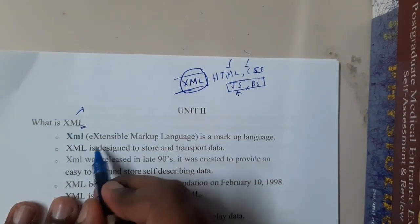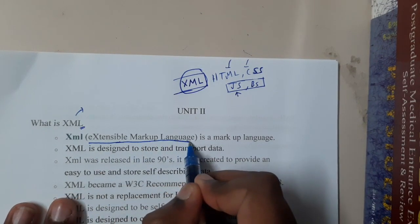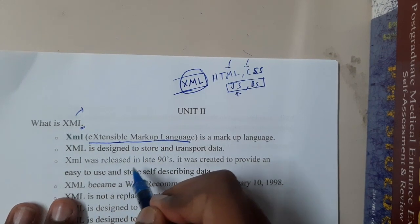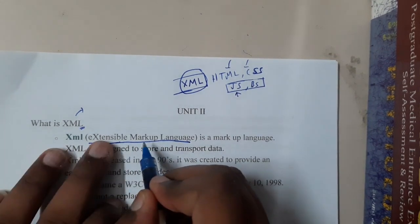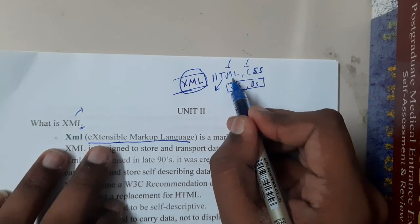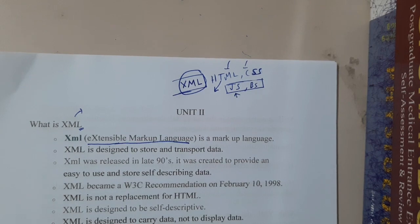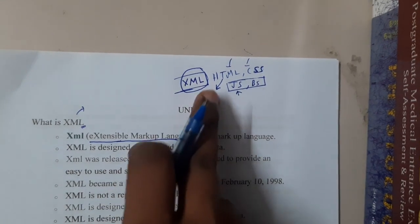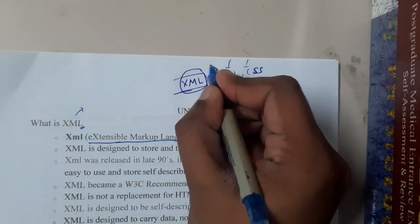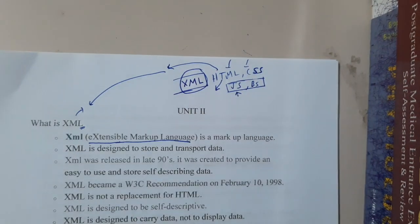XML is nothing but Extensible Markup Language. If you recall, HTML's full form is HyperText Markup Language, so both belong to the same family — markup languages. From here you can see there is some relation between these two. There are some drawbacks in HTML which resulted in the introduction of XML.